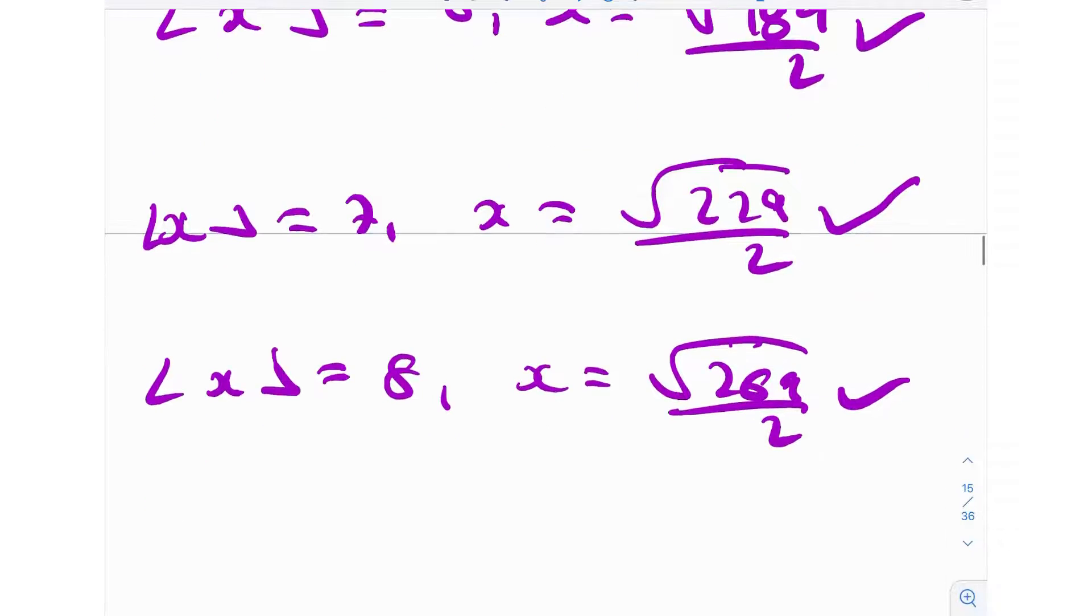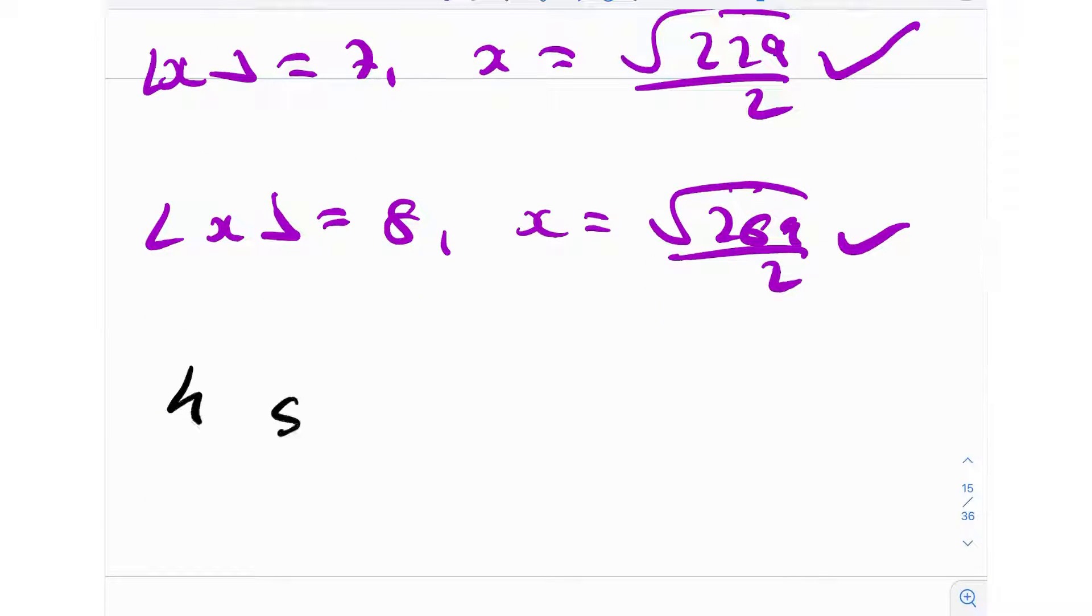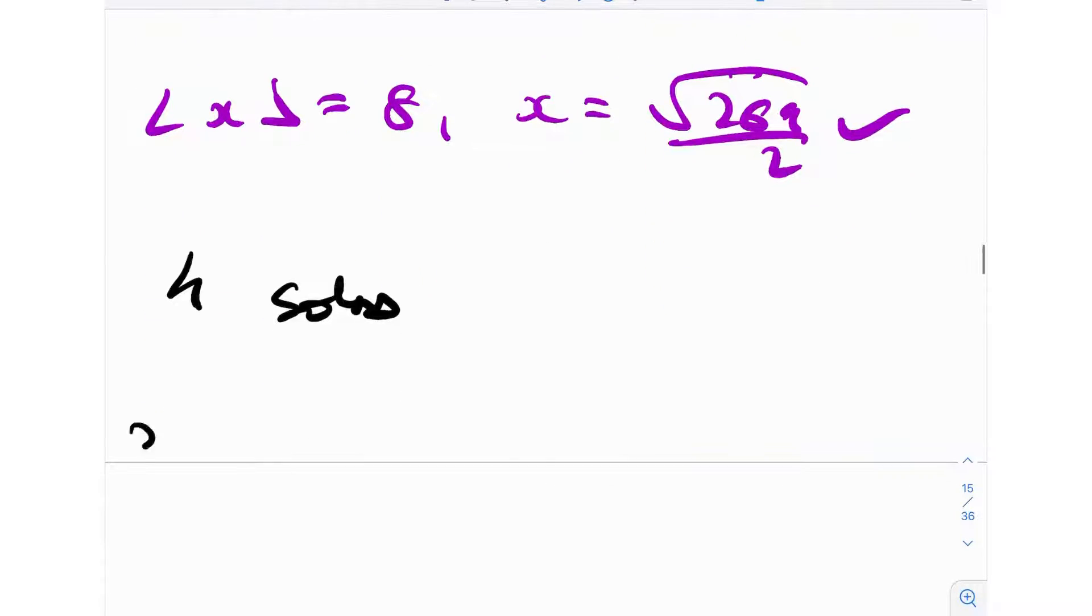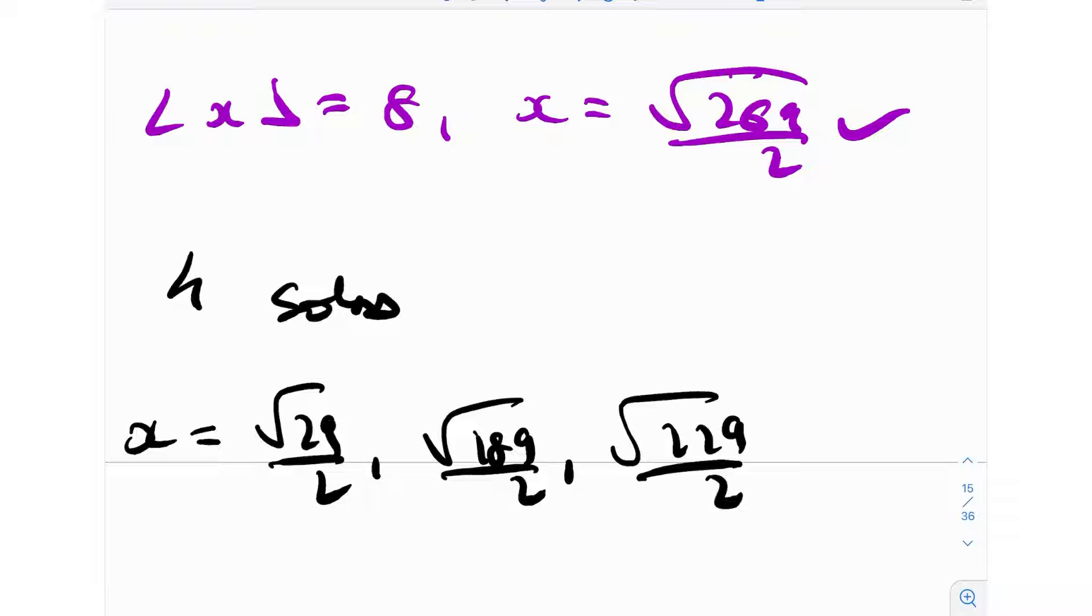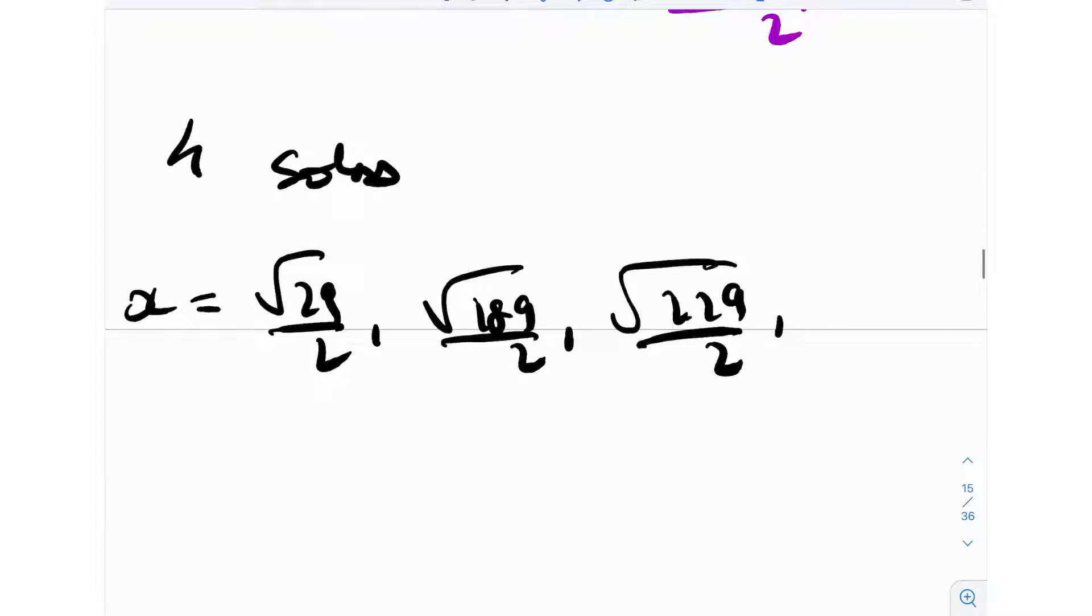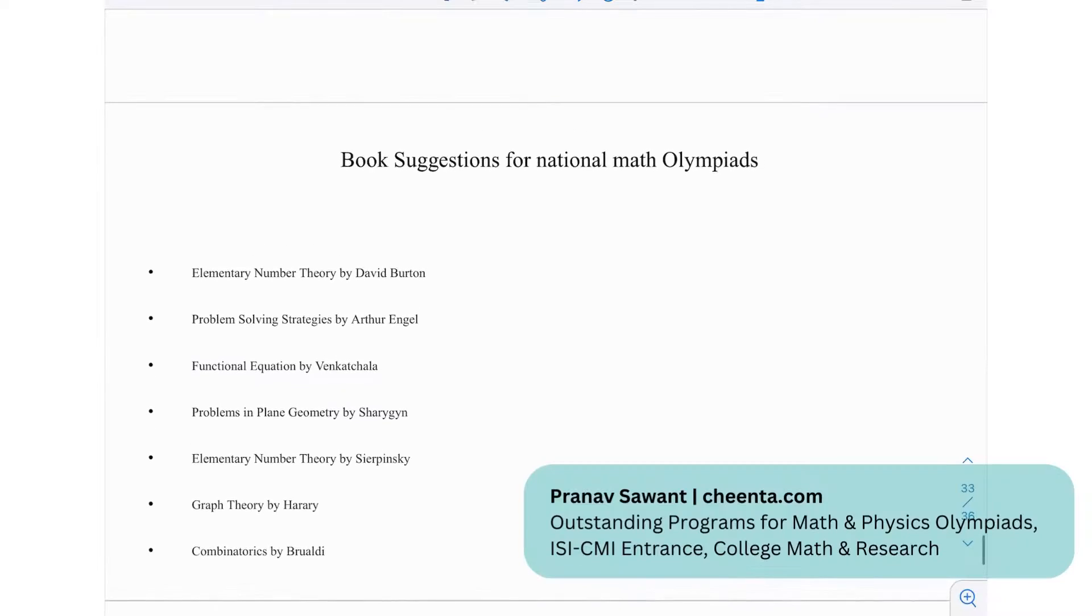We have indeed four solutions: √29/2, √189/2, √229/2, and the fourth one is √269/2. So yes, that was a pretty standard technique of solving questions of this type, and you've learned a new problem solving technique.